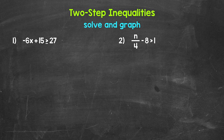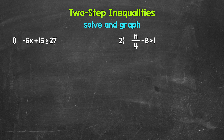When we solve two-step inequalities, we want to isolate the variable — get it by itself on one side of the inequality. We do that by using inverse operations, so this is very similar to solving two-step equations. One thing we need to be aware of when it comes to inequalities: we flip the inequality symbol when multiplying or dividing both sides by a negative. And then once we solve the inequality, we can graph the solutions — all of the values that make the inequality true.